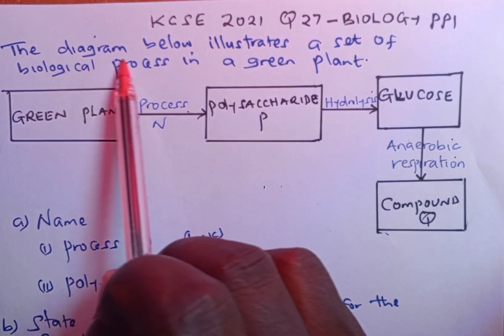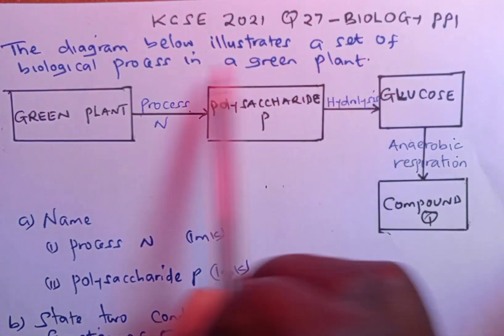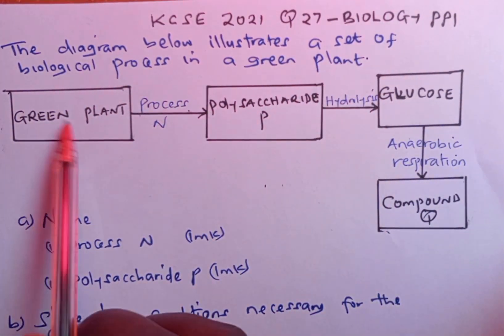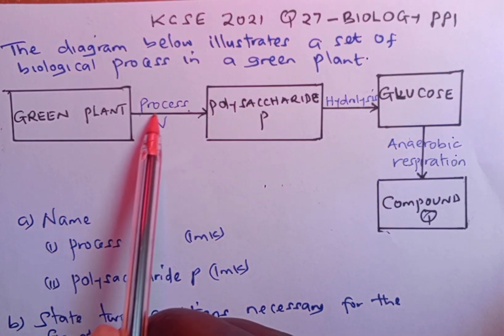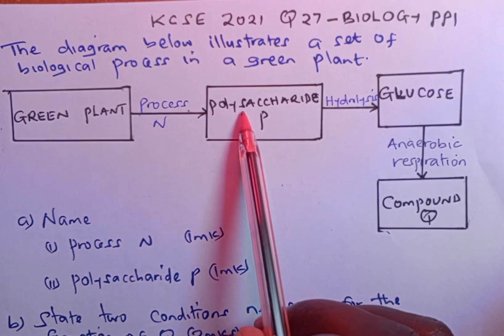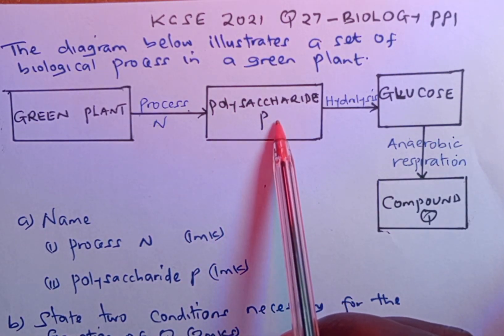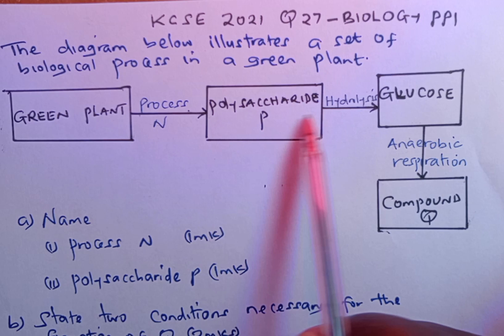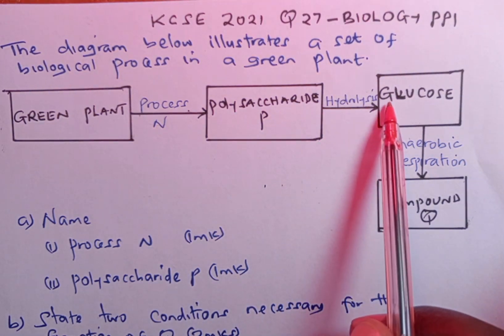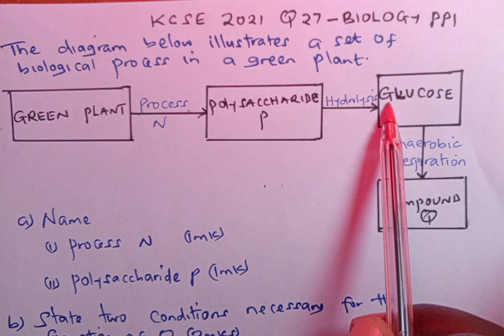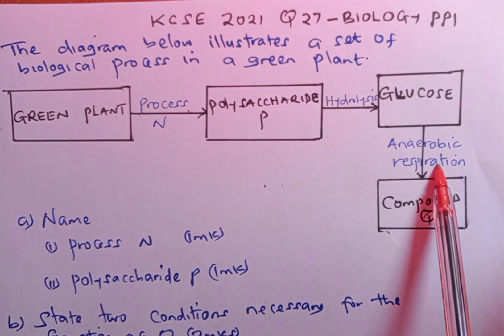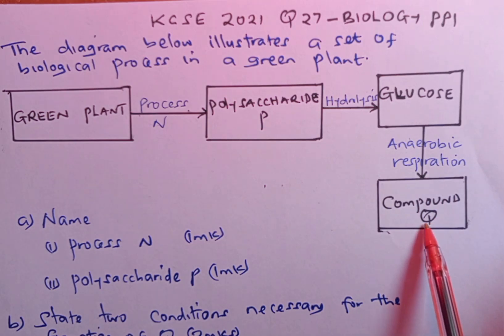The diagram below illustrates a set of biological processes in a green plant. We have the green plant undergoing process N to form polysaccharide P, and the polysaccharide P undergoes hydrolysis to form glucose. Glucose undergoes anaerobic respiration to form compound Q.